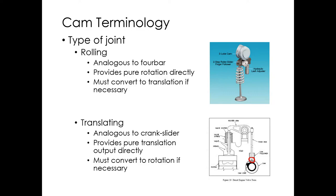There are pros and cons to each. The rolling joint is analogous to a four-bar; the translating joint is analogous to a crank-slider. The roller is more efficient in general — with a flat follower there's sliding friction causing direct efficiency loss and more wear. The roller is better in most applications; it's just more expensive and harder to package.